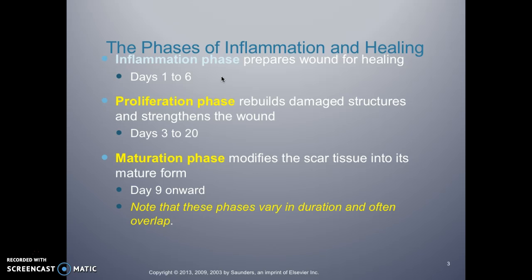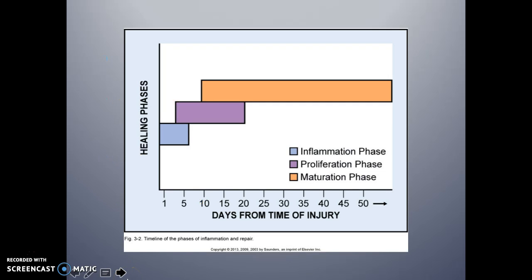The second phase is the proliferation phase — our rebuilding phase — which repairs damaged structures and strengthens the wound, usually from about day three to day 20, roughly the third week of healing. The final phase is the maturation phase, which modifies the scar tissue into its mature form, starting around day nine and continuing onward. As I said, these phases overlap, as you can see in the chart showing how the inflammatory phase covers the first couple of days, proliferation spans that middle three-week period, and maturation begins around day nine.